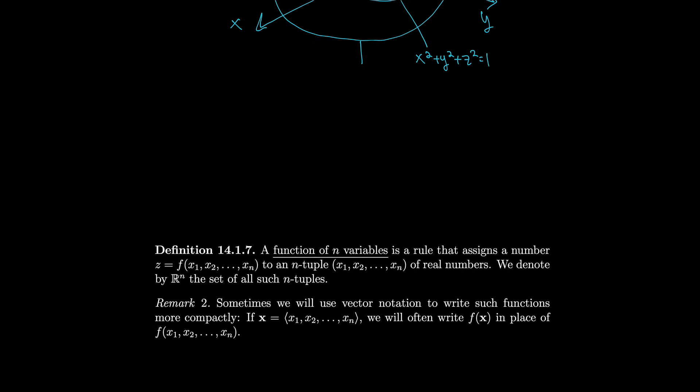We can extend beyond three variables. A function of n variables has n independent variables, with n-tuples as domain elements, denoted ℝⁿ. The output is still a single dependent variable. Because writing x₁ through xₙ repeatedly is cumbersome, we often use vector notation, writing bold x = (x₁, ..., xₙ) and simply f(x) instead of f(x₁, ..., xₙ).